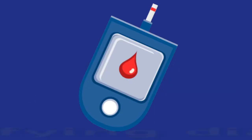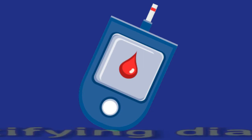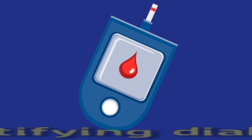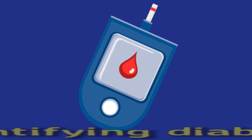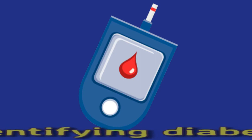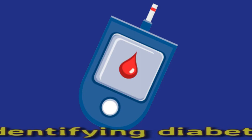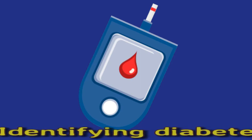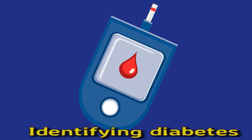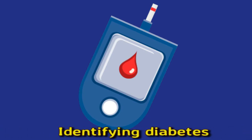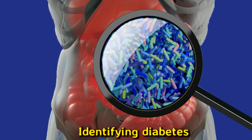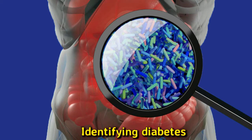Identifying diabetes: according to the American Diabetes Association, not everyone with diabetes will experience symptoms of the disease. If symptoms of high blood glucose levels do appear, they may include excessive thirst, excessive hunger, frequent need to urinate, extreme fatigue, blurred vision, delayed wound healing. A person may also become more susceptible to infections such as urinary tract infections, thrush, and upper respiratory tract infections.